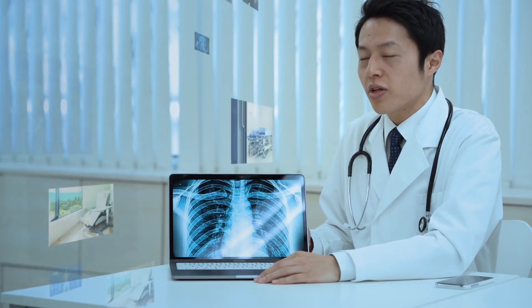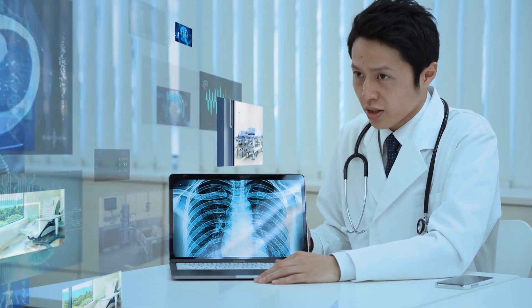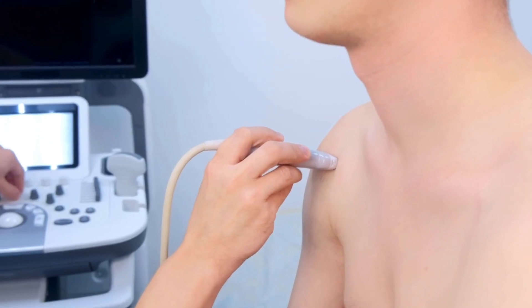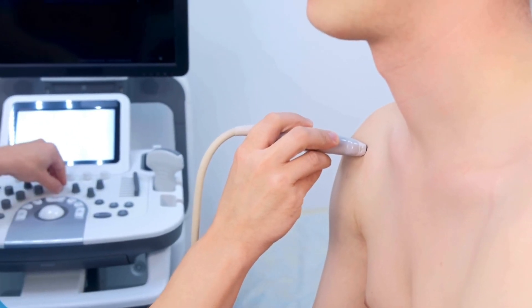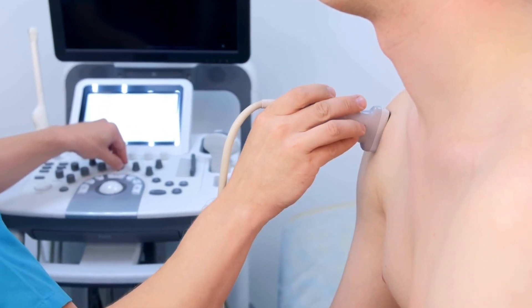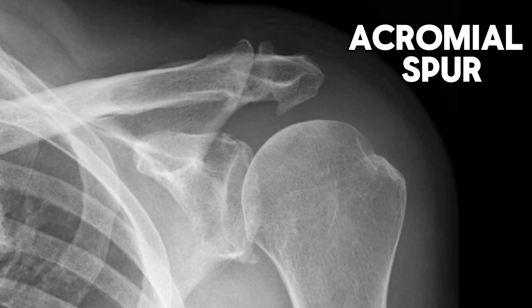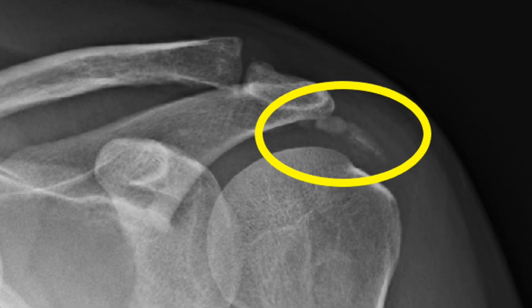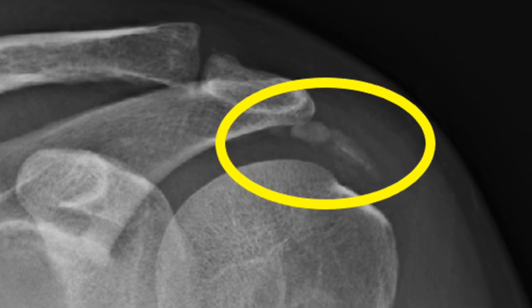If your shoulder pain hasn't settled for a few weeks after the injury, it's time to consult the doctor. The diagnosis of impingement, bursitis, and rotator cuff tear can be confirmed with an ultrasound scan. The shoulder x-ray may show a large bone spur under the acromion, which is the cause of impingement. Sometimes a calcium deposit can be seen on the rotator cuff tendon, indicating a partial tear of the tendon from impingement.